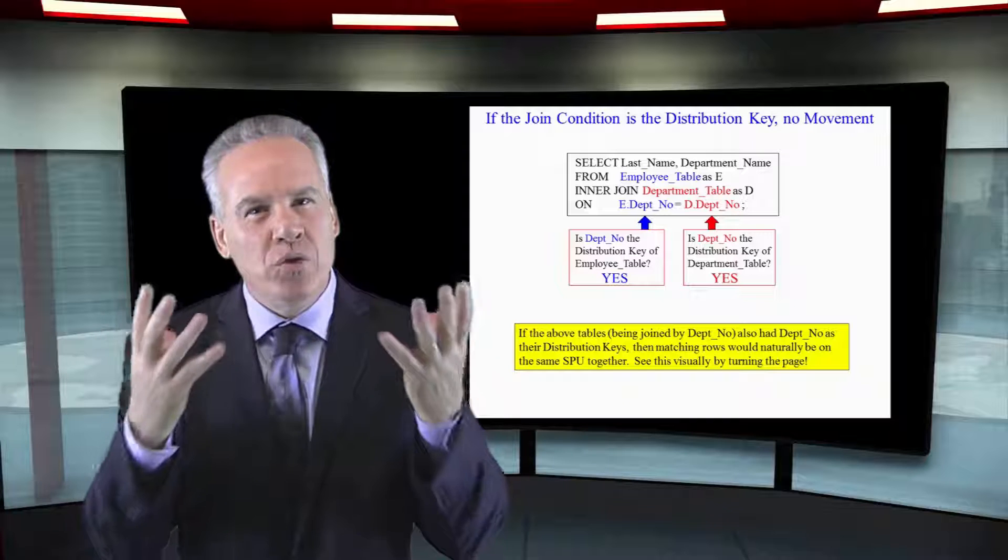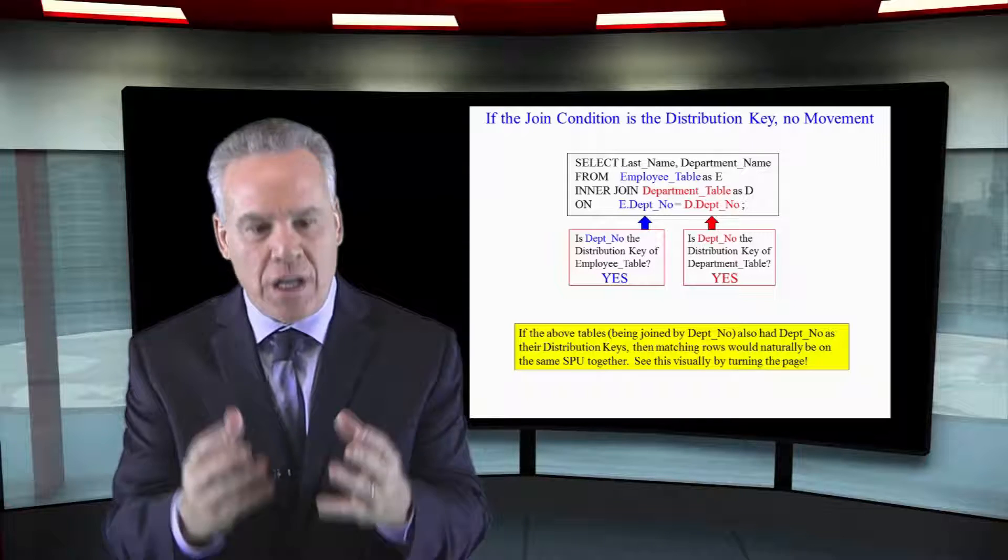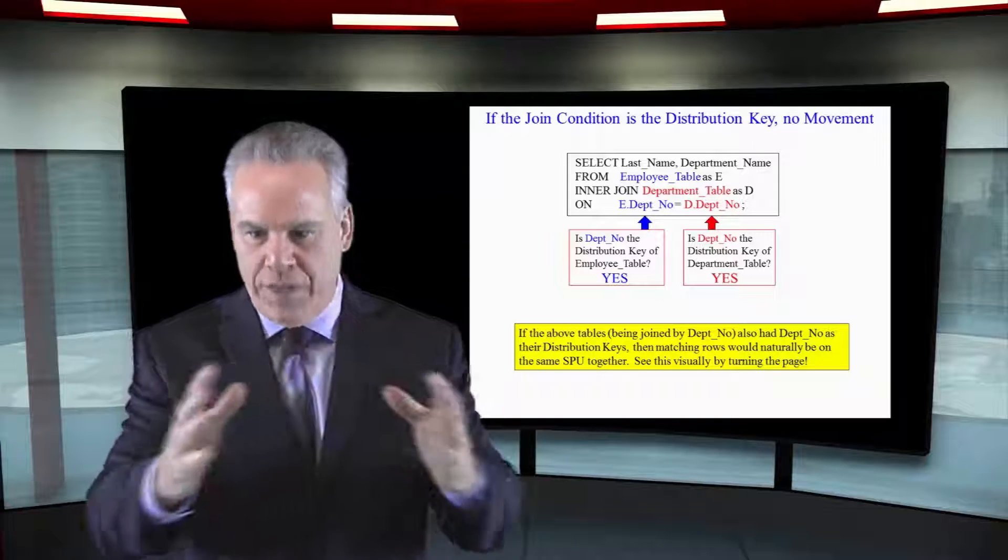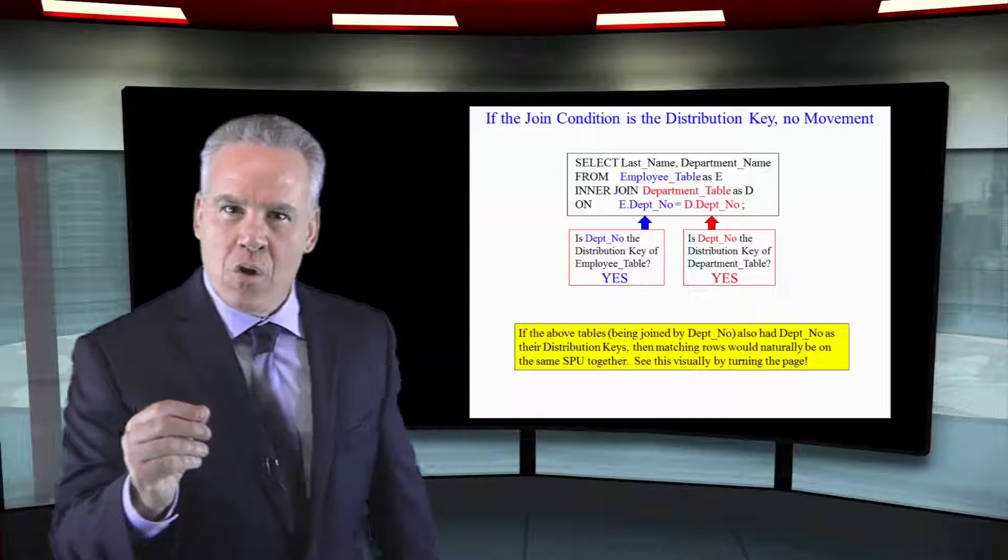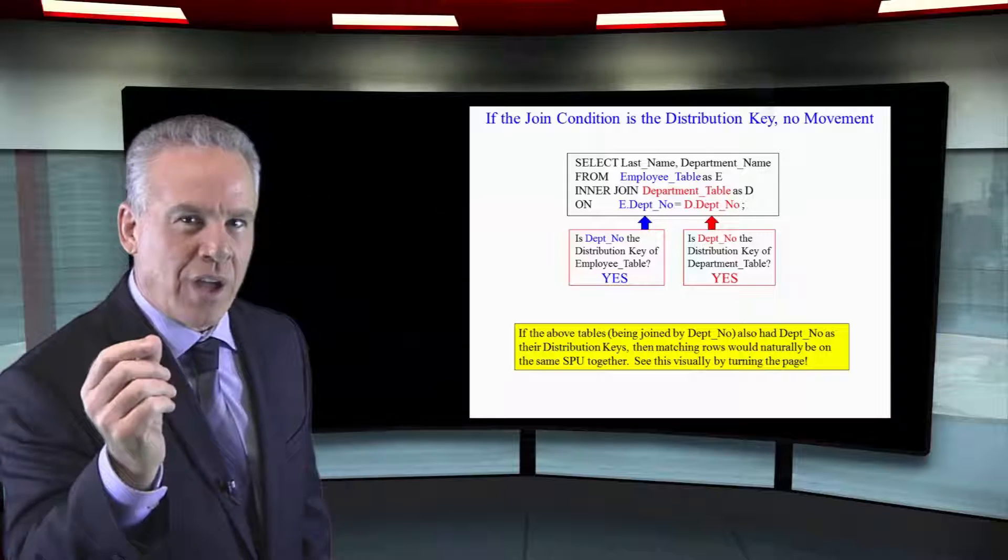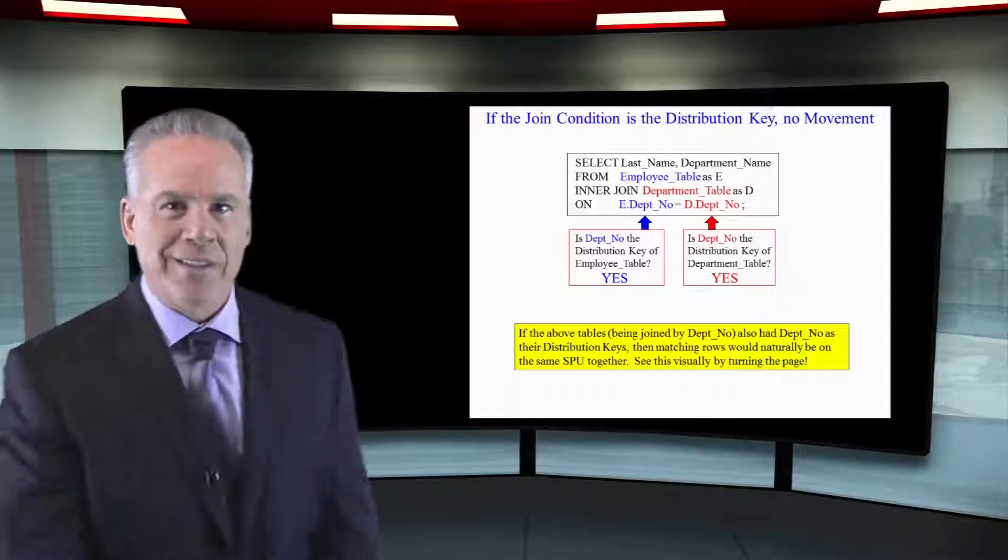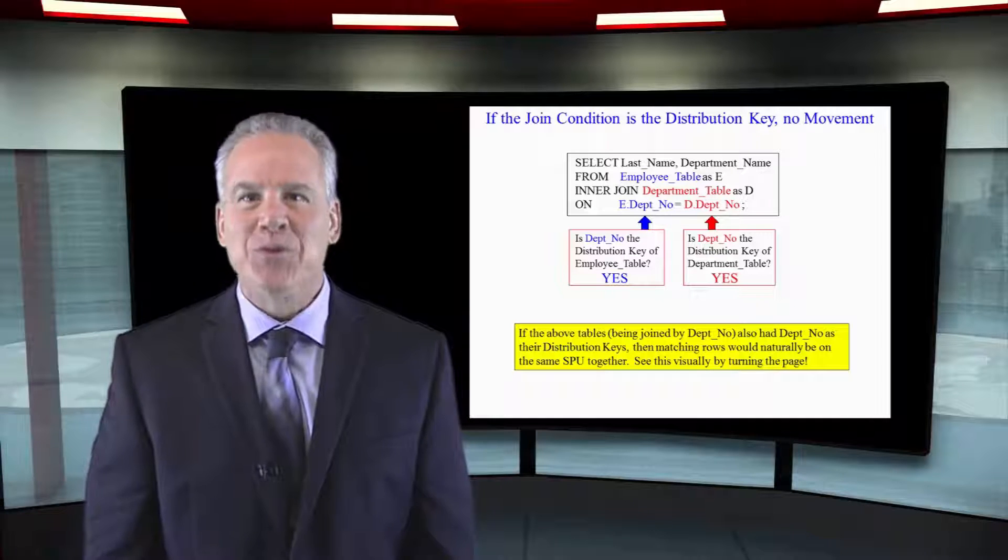As a matter of fact, when you choose that distribution key, do you choose for perfect distribution? Do you choose for retrieval, or do you do it based on joins? The most impactful joins.